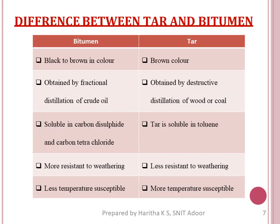Differences between tar and bitumen: Bitumen is black to brown in color, whereas tar is brown. Bitumen is obtained by fractional distillation of crude oil or petroleum; tar is obtained by destructive distillation of wood. Bitumen is soluble in carbon disulfide and carbon tetrachloride, whereas tar is soluble in toluene. Bitumen is more resistant to weathering compared to tar. Also, bitumen is less temperature-susceptible and tar is more temperature-susceptible.